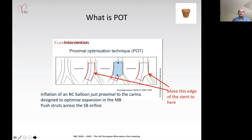POT is the inflation of a non-compliant balloon just proximal to the carina. It's designed to optimize expansion in the main branch and push struts across the side branch orifice—as shown in a cartoon generated by the European Bifurcation Club and published in EuroIntervention. We're ultimately trying to deploy the stent optimally, with the edge of the stent moved across the side branch.